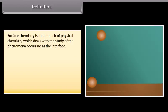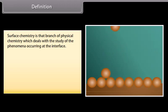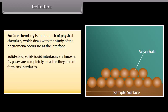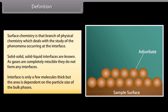Surface chemistry is that branch of physical chemistry which deals with the study of the phenomena occurring at the interface — that is, the boundary separating two bulk phases. Solid-solid and solid-liquid interfaces are known examples. As gases are completely miscible, they do not form any interfaces. The interface is only a few molecules thick, but the area is dependent on the particle size of the bulk phases.